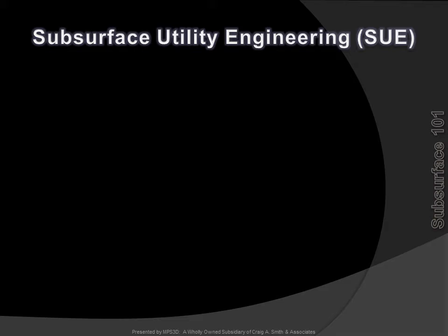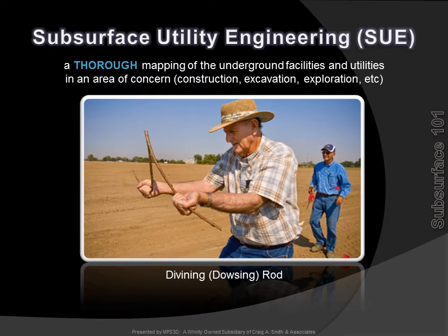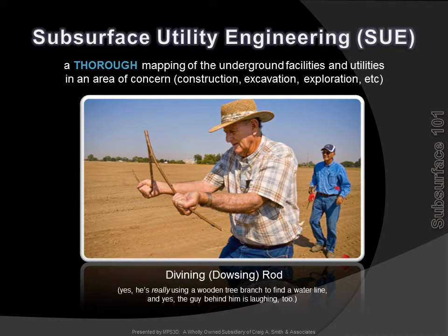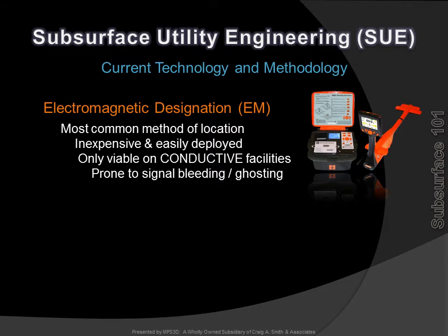So what exactly is SUE? SUE is a thorough mapping of the existing subsurface facilities in the area of proposed excavation or construction. The divining rod is an example of how not to accurately locate facilities. Current technologies for locating facilities are considerably more accurate than the dowsing rod. EM, or electromagnetic designation, is the most common technology, but requires the target facility to be conductive or have a tracer wire, like steel or ductile iron.